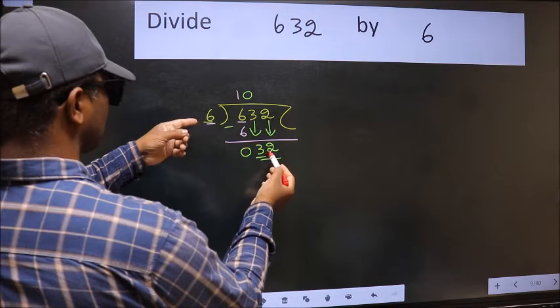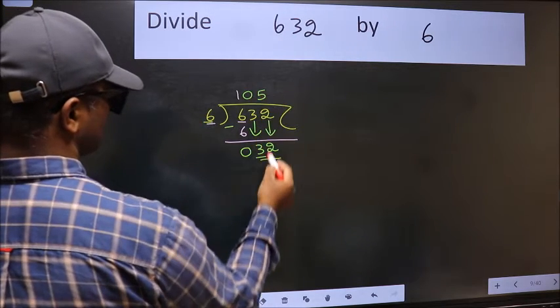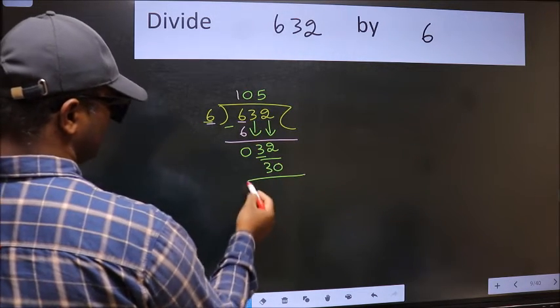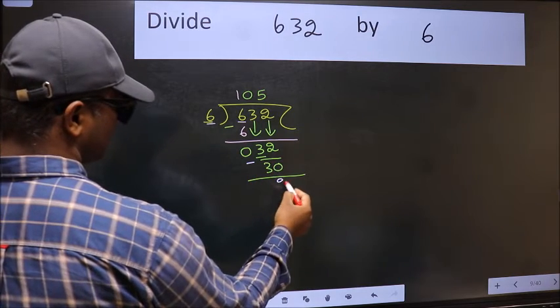A number close to 32 in 6 table is 6, 5, 30. Now we should subtract. We get 2.